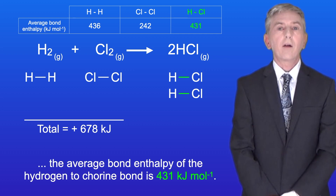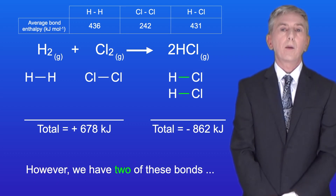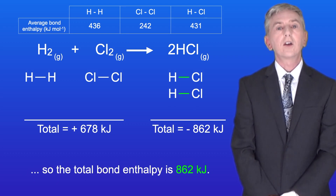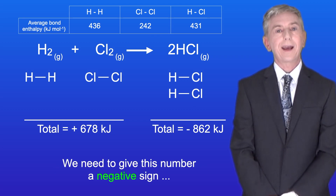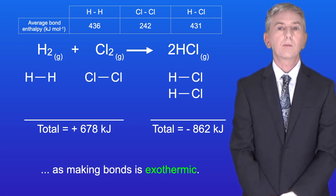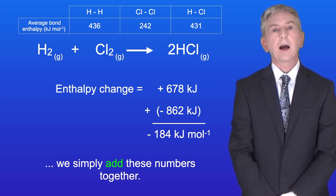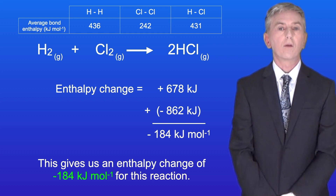Looking at the product, the average bond enthalpy of the hydrogen to chlorine bond is 431 kilojoules per mole. However, we've got two of these bonds, so the total bond enthalpy is 862 kilojoules, and we need to give this number a negative sign, as making bonds is exothermic. To calculate the enthalpy change of the whole reaction, we simply add these numbers together. This gives us an enthalpy change of minus 184 kilojoules per mole for this reaction.